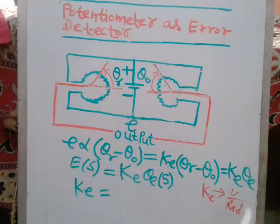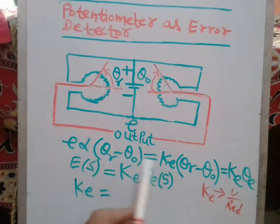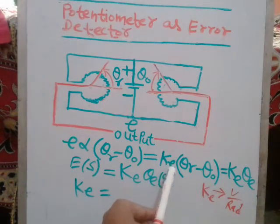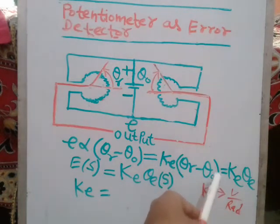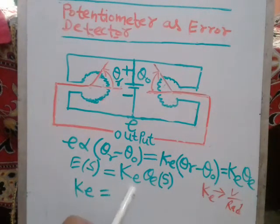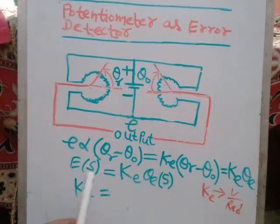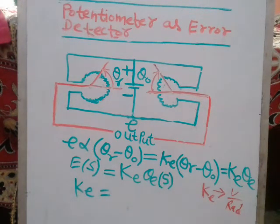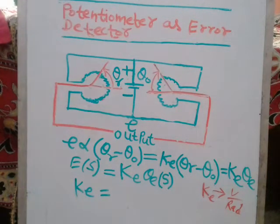When you remove the proportionality sign, you get the proportionality constant Ke, so: Ke × (theta_r − theta_naught) = Ke × theta_e, meaning Es = Ke × theta_e. Taking the Laplace transform: E(s) = Ke × theta(s). Here Ke is the proportionality constant in volts per radian.